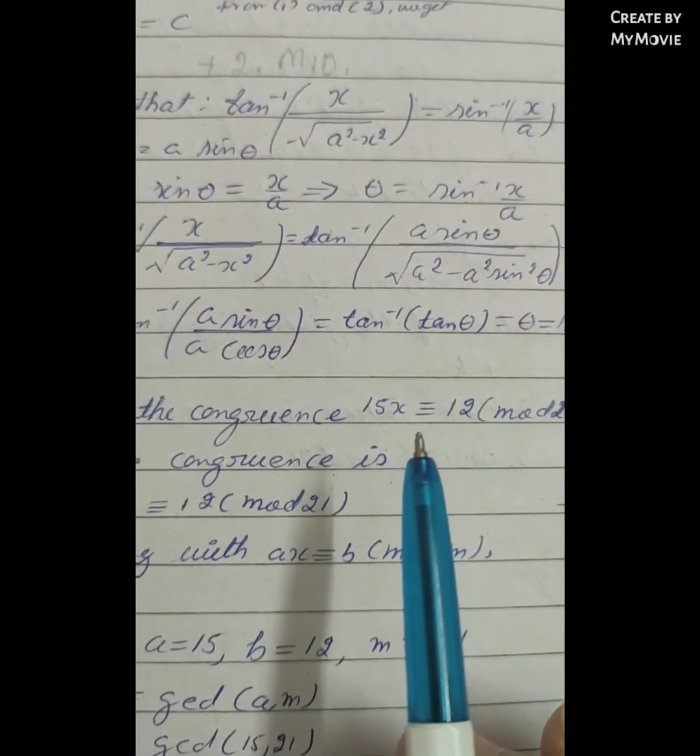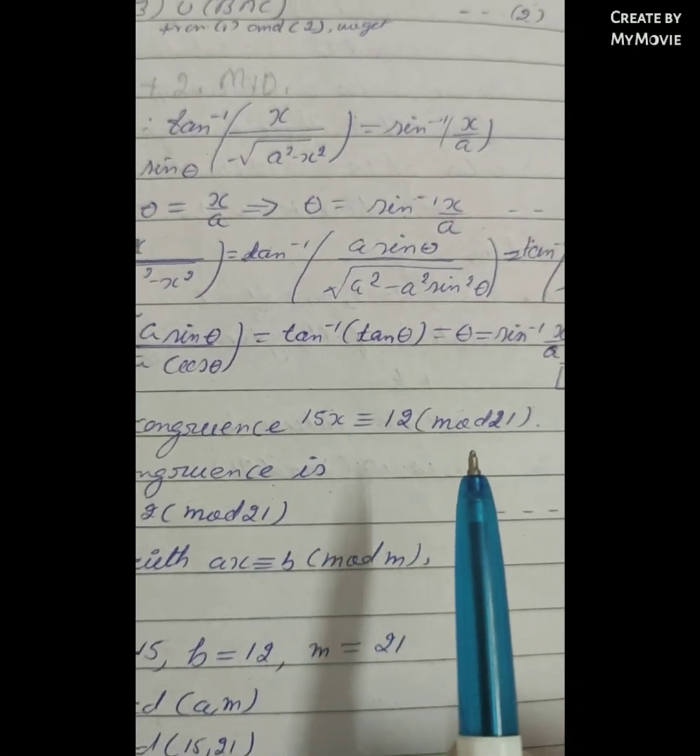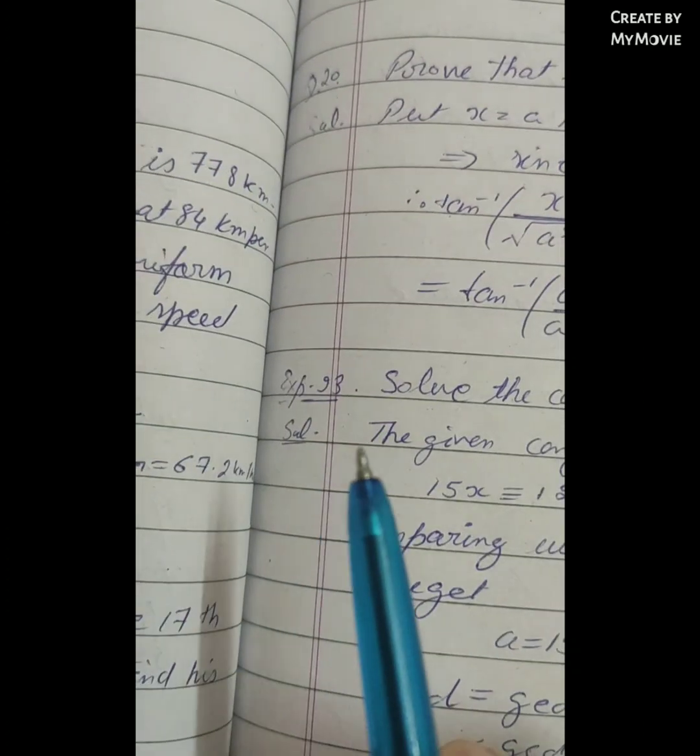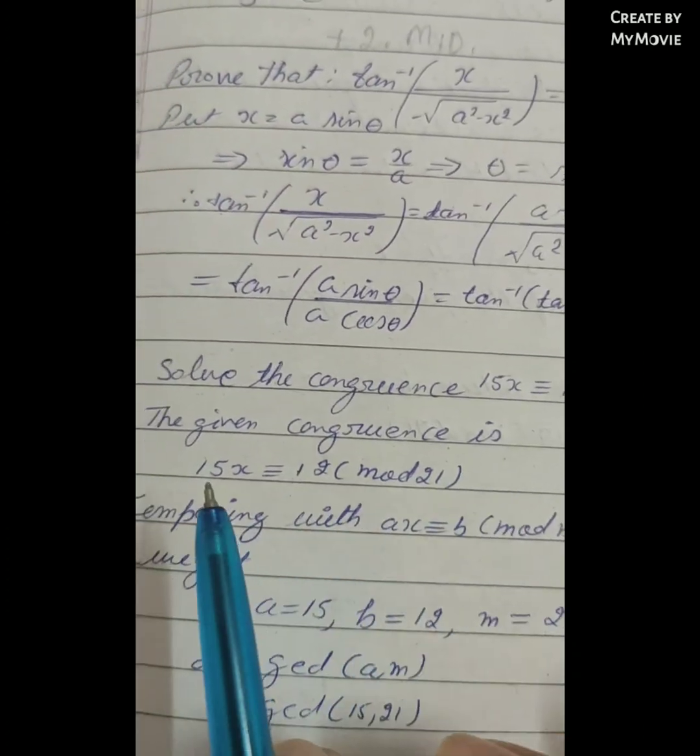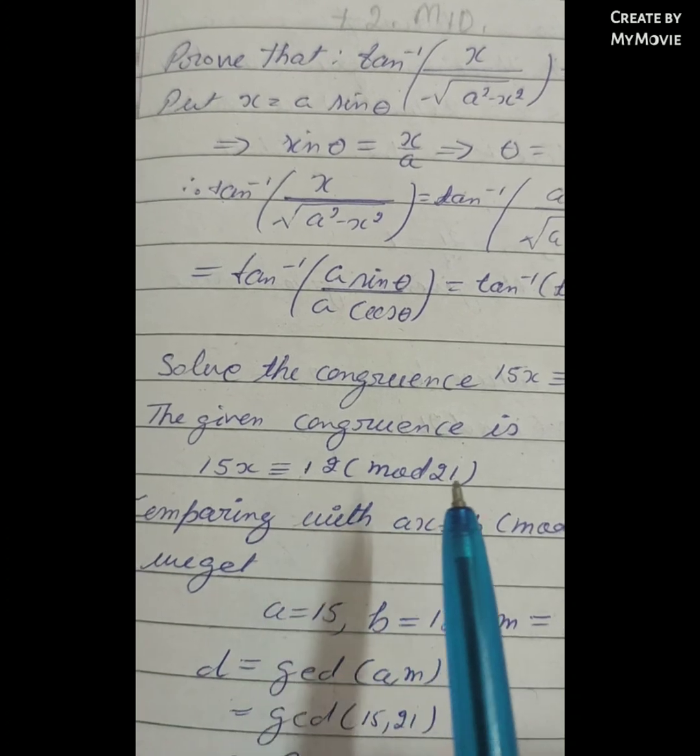Solve the congruence 15x ≡ 12 (mod 21). The given congruence is 15x ≡ 12 (mod 21).